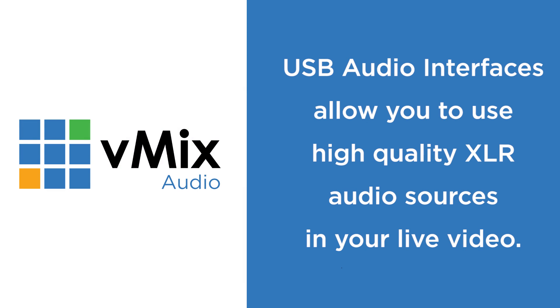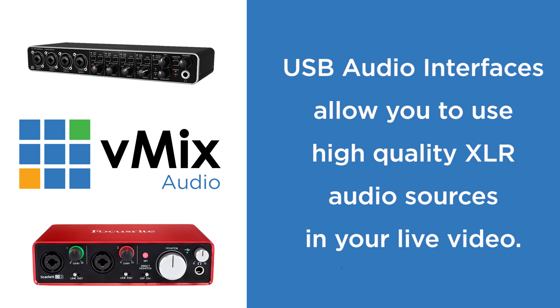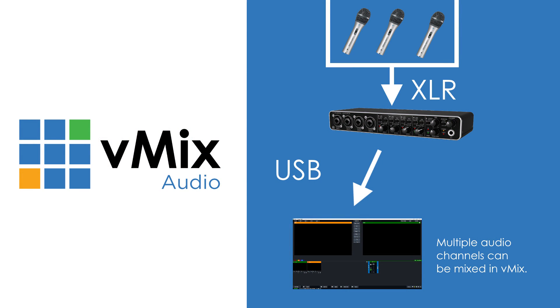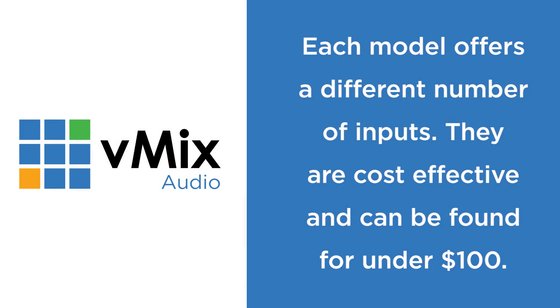Next up we're going to look at USB audio interfaces. If you want to start using higher quality microphones that typically use an XLR connection, you could look at using a USB audio interface. These devices convert the high quality XLR microphone signal to a digital audio signal that's sent to vMix over a USB cable. They allow you to add multiple microphones into your live production and then use the vMix audio settings to mix levels and adjust the audio. There are a few brands that make these including Behringer, Focusrite, Numark, and Roland. I have a Focusrite two-input unit here. For our studio we use the Behringer UMC 404 which has four XLR connections. vMix also supports ASIO audio, meaning you can bring in multiple channels of audio.